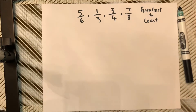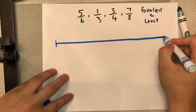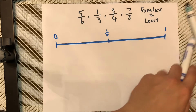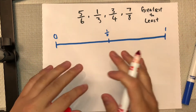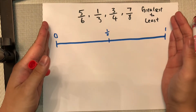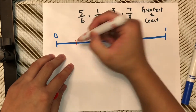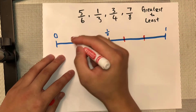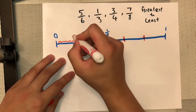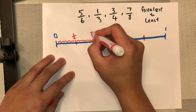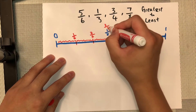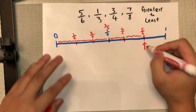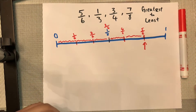I'm going to use my number line to help me again. Here's my number line with zero, one, and half marked. I'll use red to show my fractions and see where they fall. For 5/6, I need to split my number line into six equal parts: one, two, three, four, five, six. So that's one sixth, two sixths, three sixths — which is the same as half — four sixths, five sixths. My 5/6 is right here.